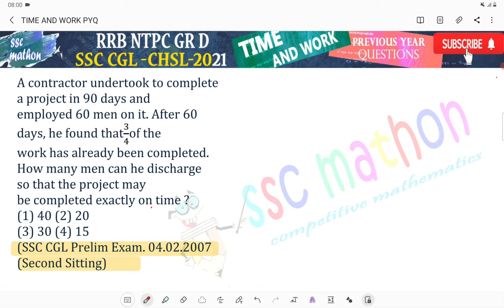A contractor undertook to complete a project in 90 days and employed 60 men on it. After 60 days, he found that 3 by 4 of the work has already been completed. How many men can be discharged so that the project may be completed exactly on time?